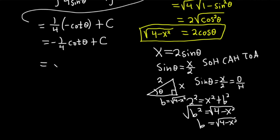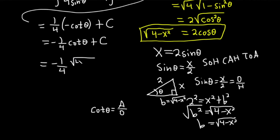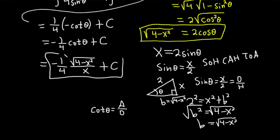Now go back to our result: negative one-fourth cotangent theta. Cotangent is adjacent over opposite — it's 1 over tangent, so A over O. Adjacent is the square root of 4 minus x squared, and opposite is x. So the final answer is negative one-fourth times the square root of 4 minus x squared over x, plus C.